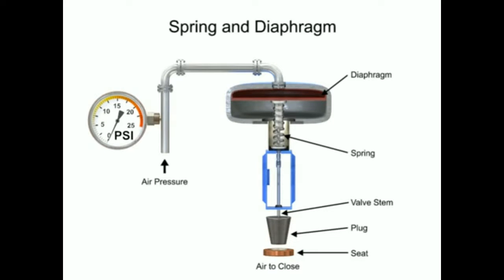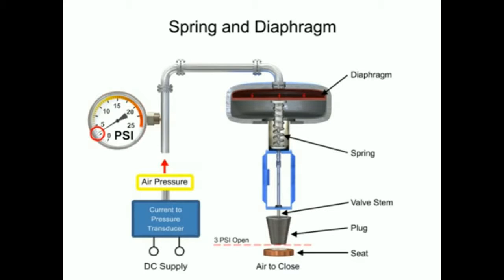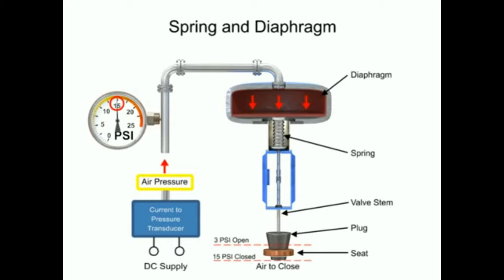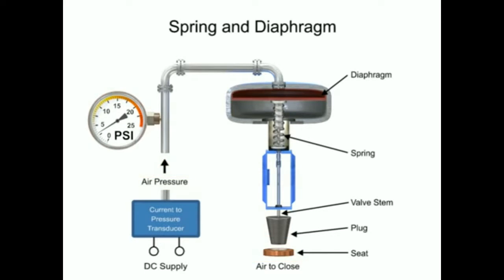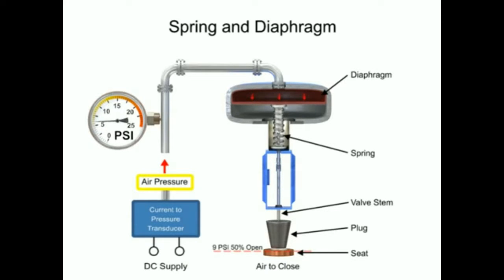To vary the position of the restrictor and flow through the valve, a current-to-pressure transducer can be used to provide a 3 to 15 PSI signal to the diaphragm. At 3 PSI, the valve is maintained open, and at 15 PSI, the valve is maintained closed. Pressures between the 3 to 15 PSI range proportionally change the flow of the valve. For example, a pressure of 9 PSI applied to the diaphragm moves the spring and valve stem to 50% of operating range.